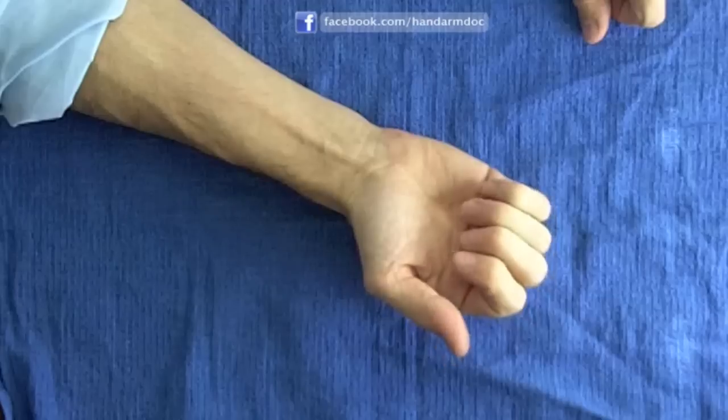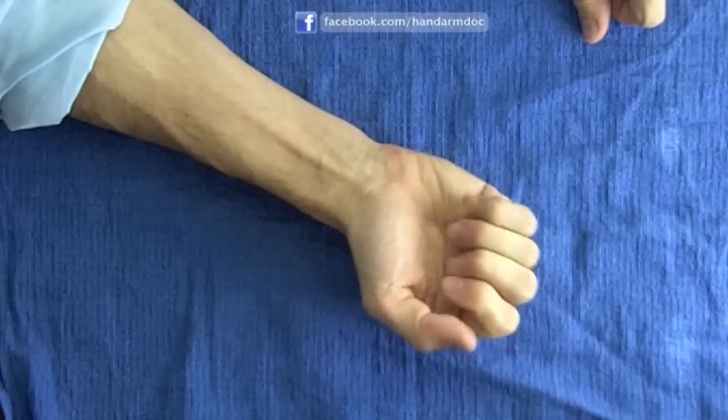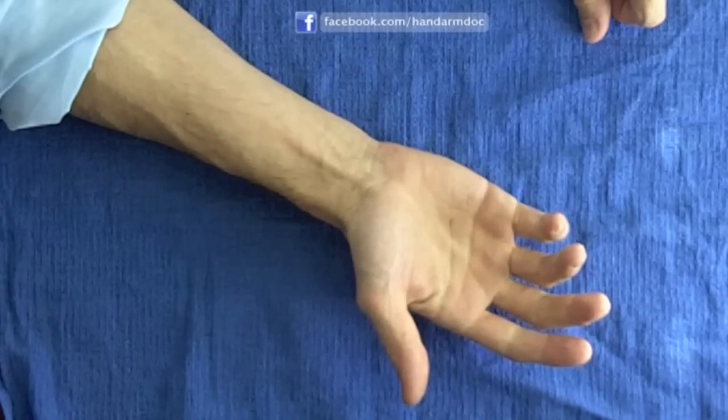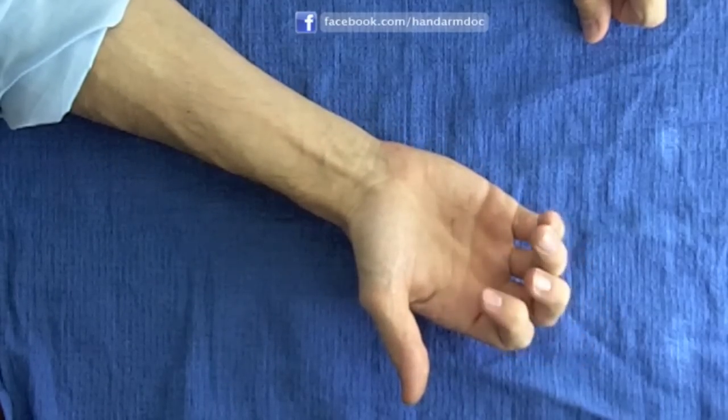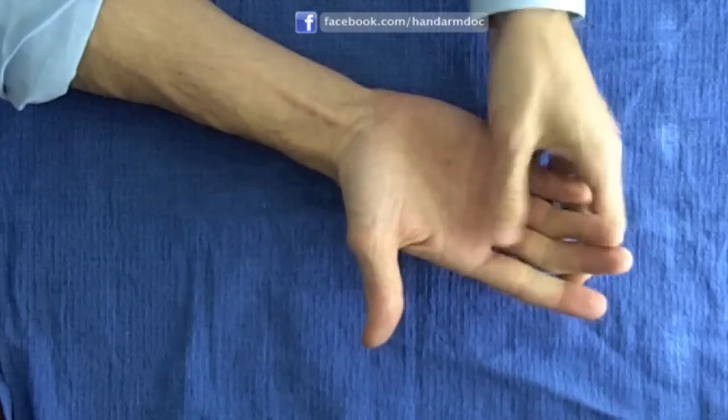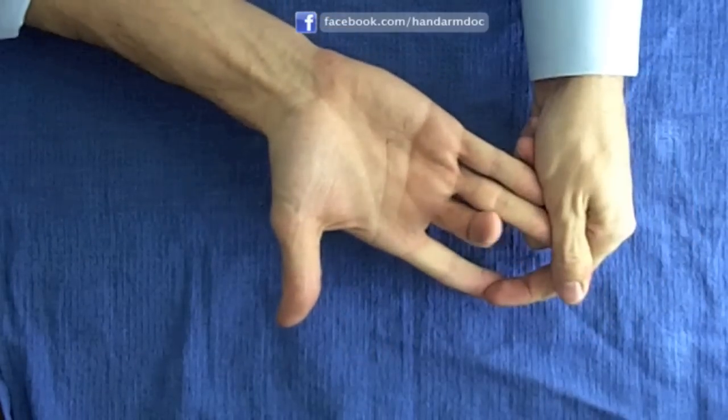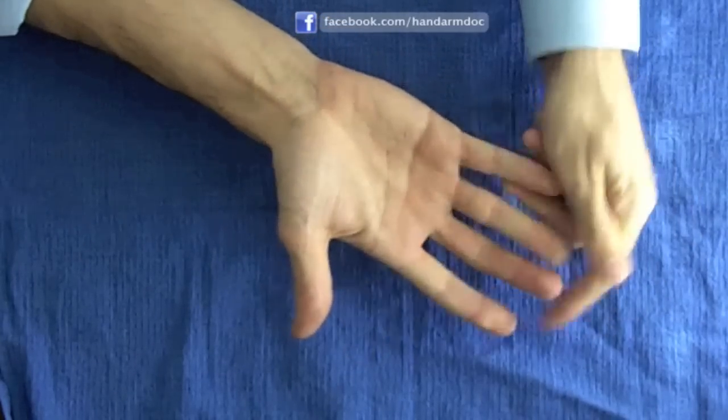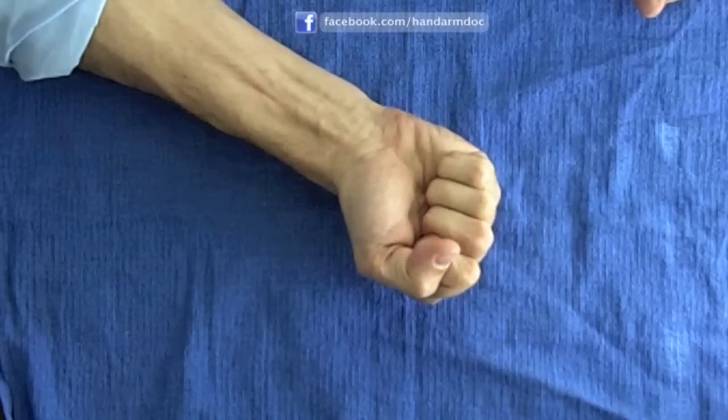Usually each finger joint can be controlled individually. You can bend the distal joint and the proximal joint separately. When all the finger flexor muscles and tendons pull together, you make a tight fist.